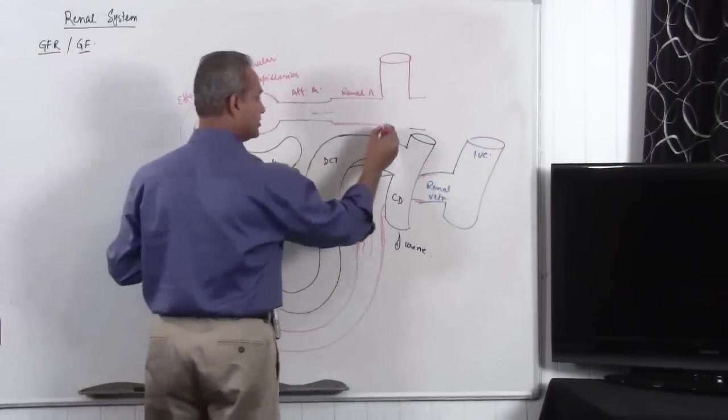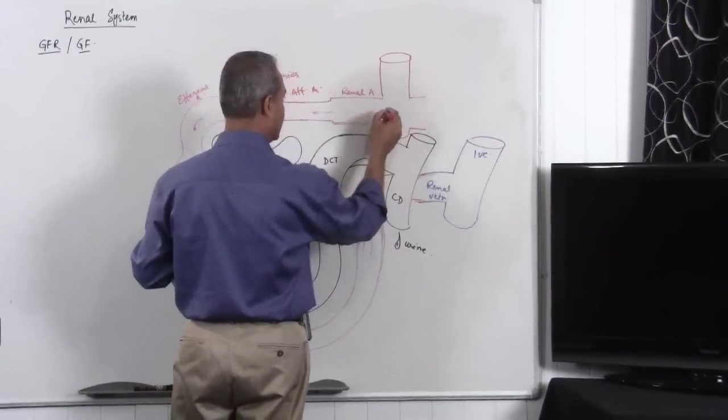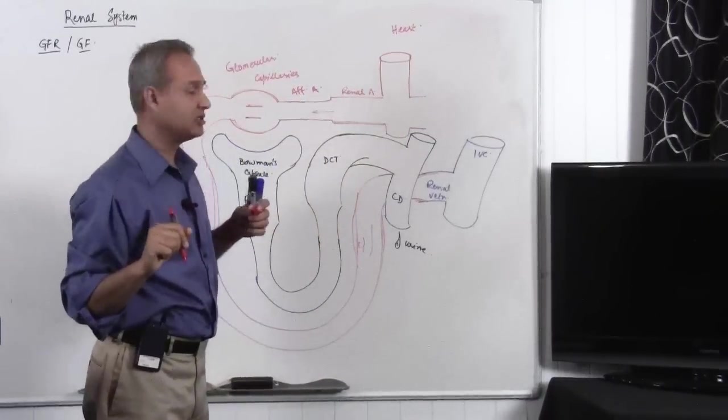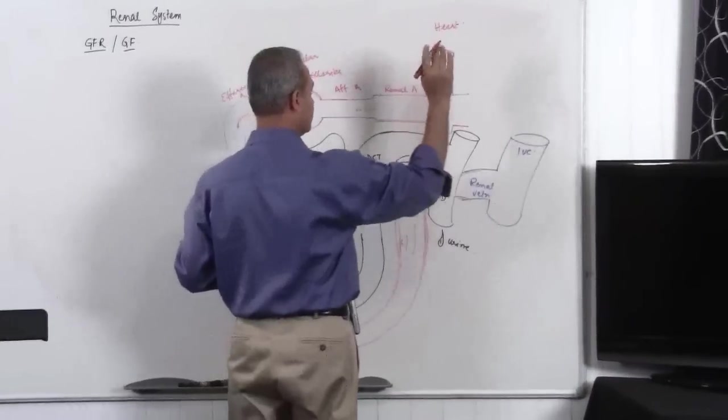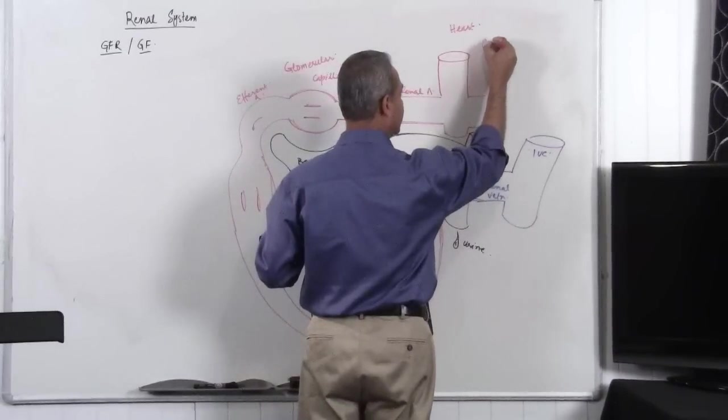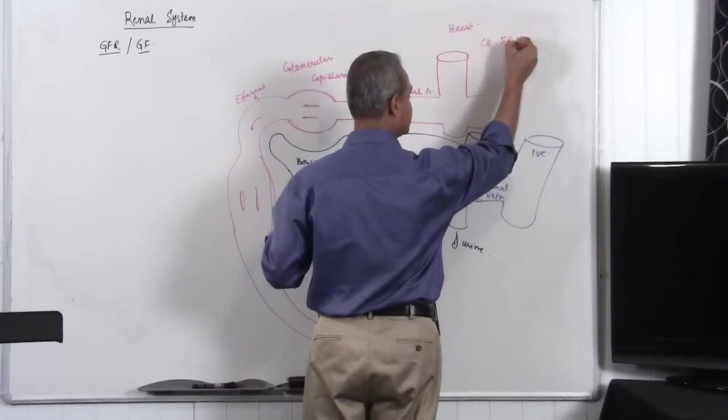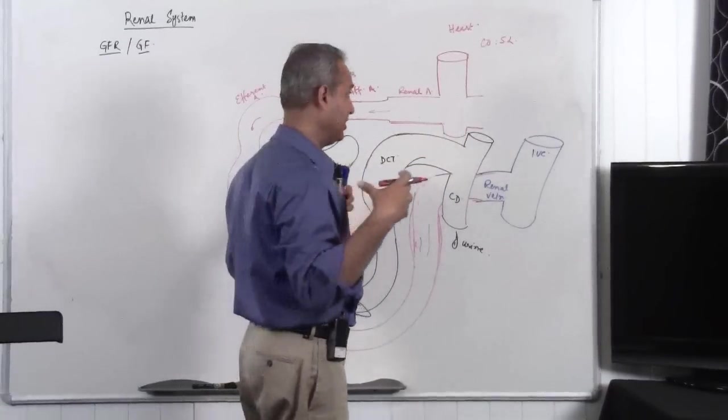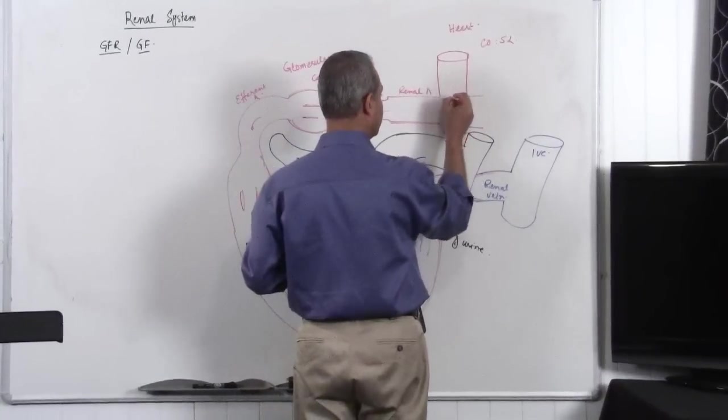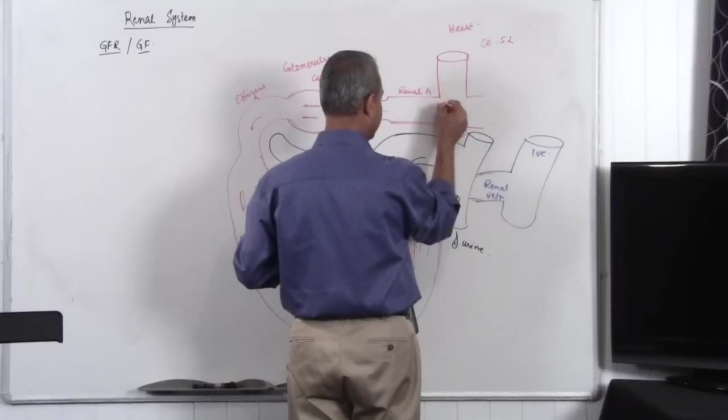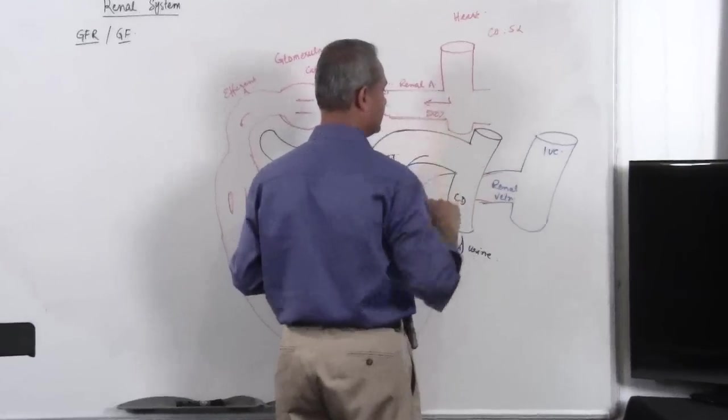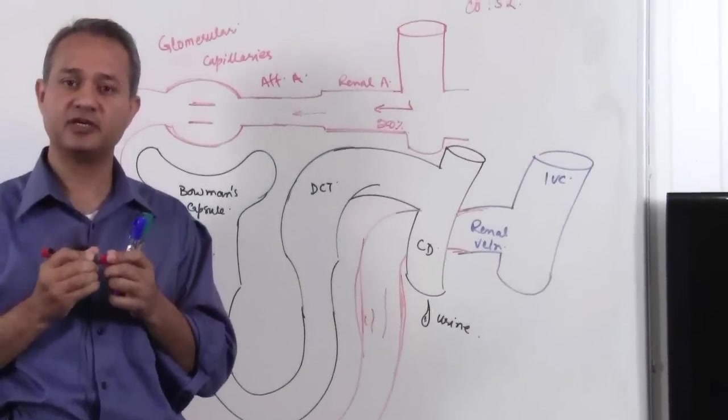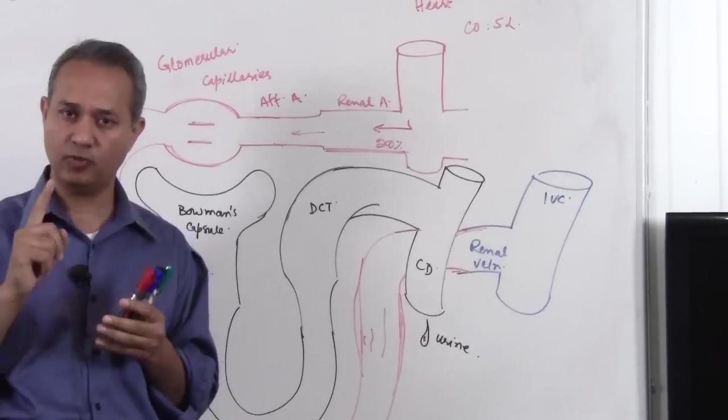So the blood arrives in the heart. How much blood comes into the kidneys? Normal physiological cardiac output is about 5 liters. Out of that 5 liters cardiac output per minute, the renal artery usually gets 20% of that blood flow.